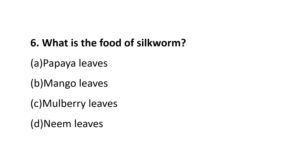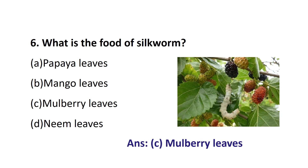Question number 6. What is the food of silkworm? Option A, Papaya leaves; Option B, Mango leaves; Option C, Mulberry leaves; Option D, Neem leaves. The answer is Option C, Mulberry leaves. Silkworms get their nutrition from mulberry leaves.